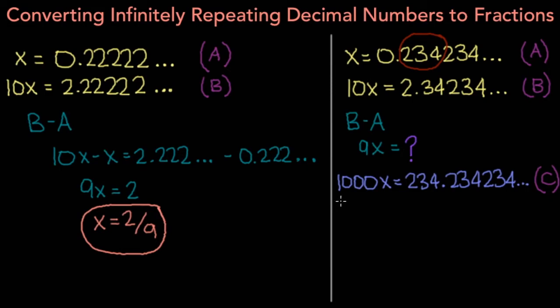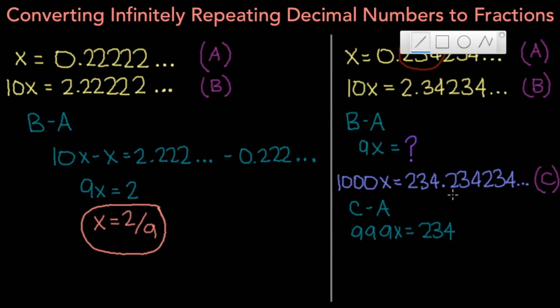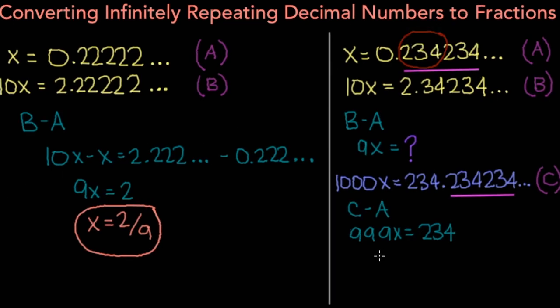And you'll notice if we subtract a from c, that is if we do c minus a, on the left hand side, we have 1,000x minus x, which is going to be 999x. And on the right side, we are left with just 234, because the numbers after the decimal point in both equations match up, and thus they cancel out when we do the subtraction. Dividing by 999 on both sides gives us x is equal to 234 divided by 999.